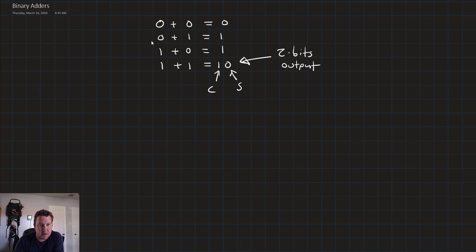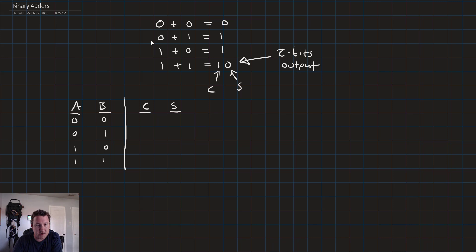So if we put this into a truth table, we'll get something that looks like this. We have A and B on the input side with combinations 0,0 / 0,1 / 1,0 / and 1,1. And we have carry and sum on the output side. 0 plus 0 is equal to 0,0. 0 plus 1 is equal to 0,1. 1 plus 0 is equal to 0,1. And 1 plus 1 is equal to 1,0.